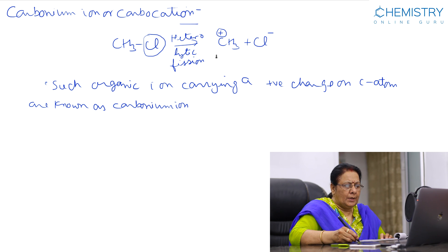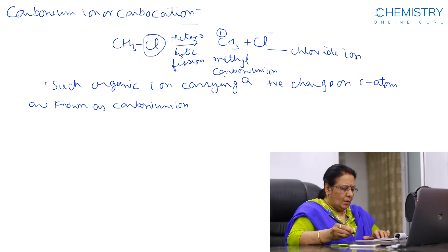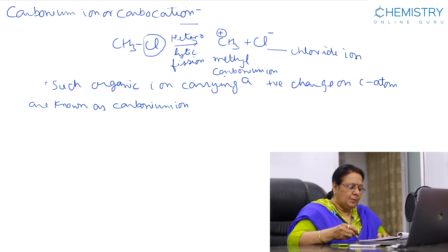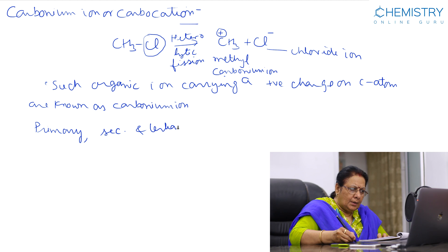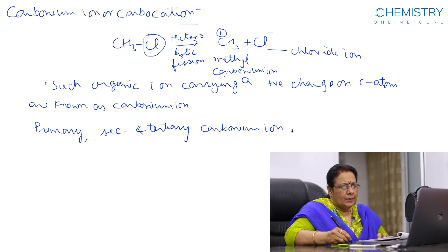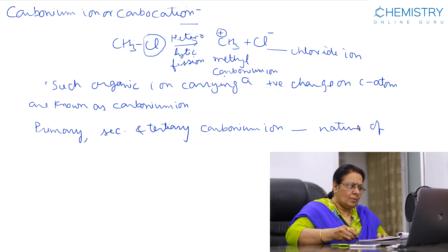This ion is known as a carbonium ion, and this group is methyl, so its name is methyl carbonium ion. This is the chloride ion. Carbonium ions are formed by the heterolytic fission of a covalent bond and are named by adding 'carbonium ion' after the name of the parent alkyl group. They are also termed primary, secondary, and tertiary carbonium ions depending upon the nature of the carbon atom carrying the positive charge.